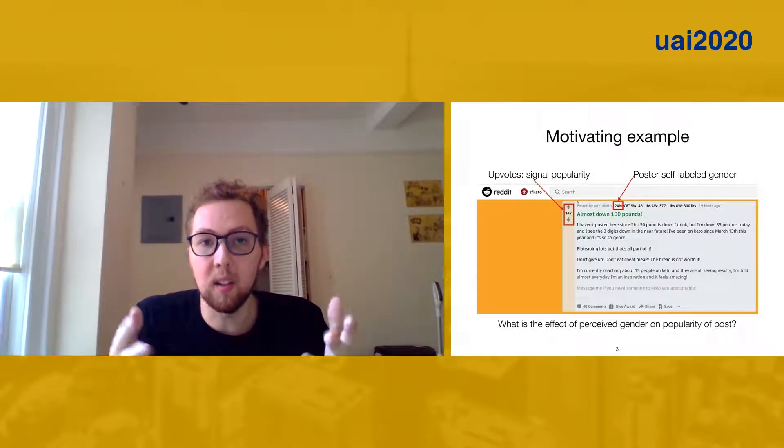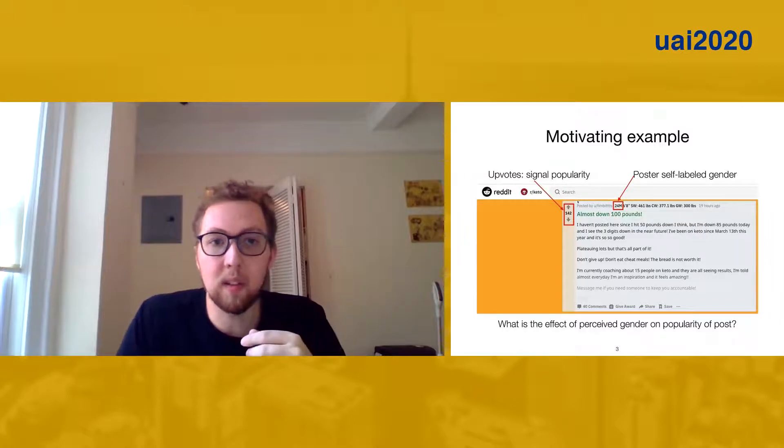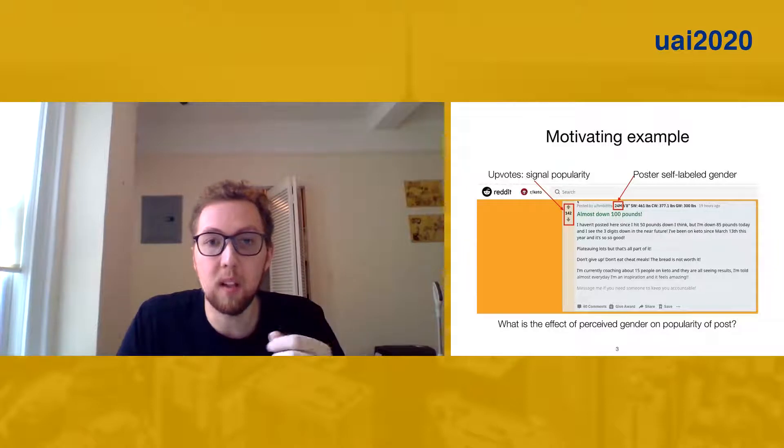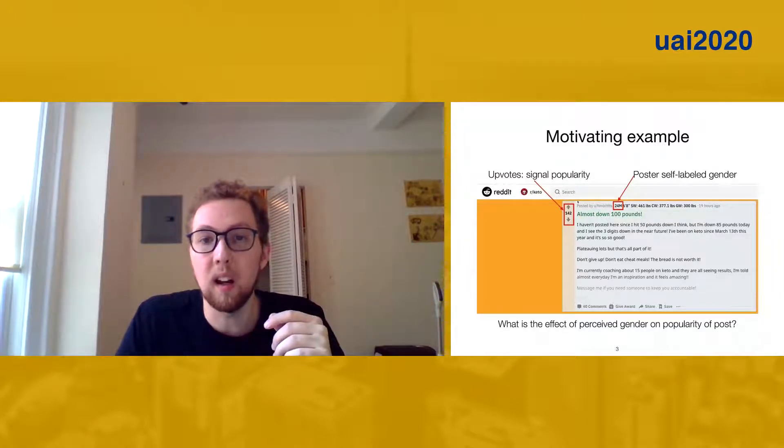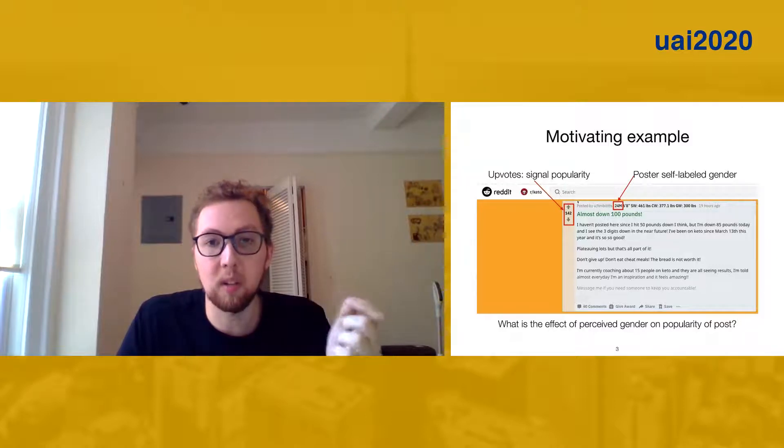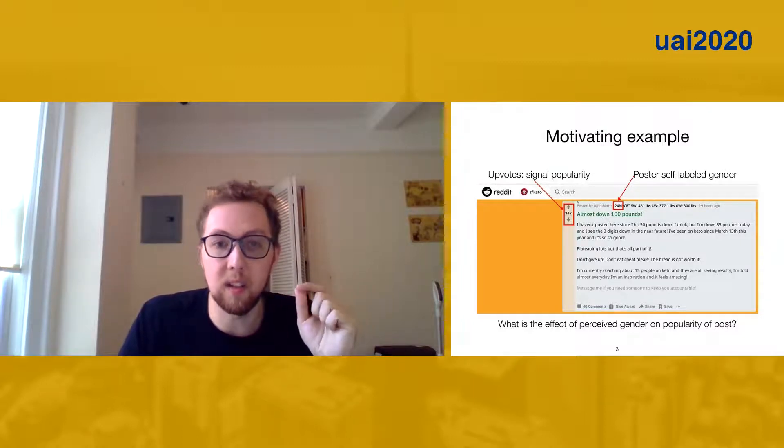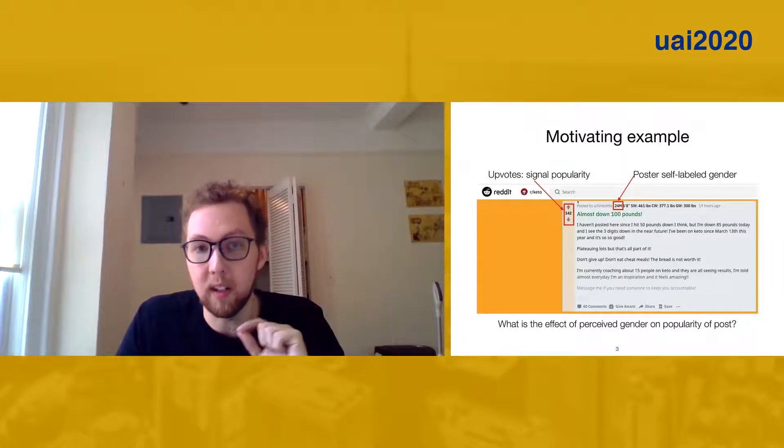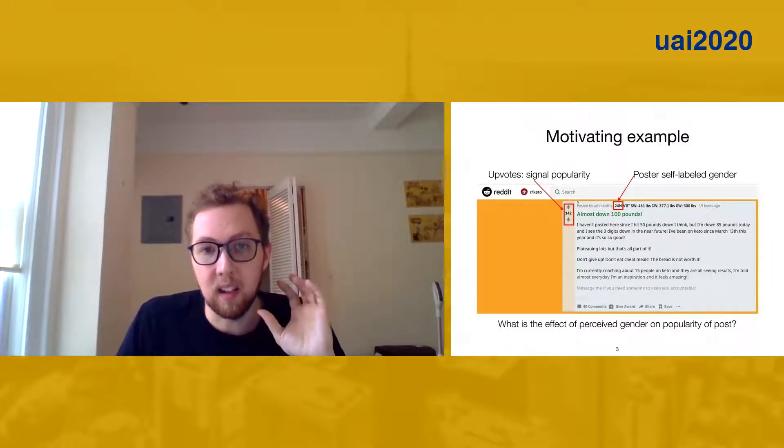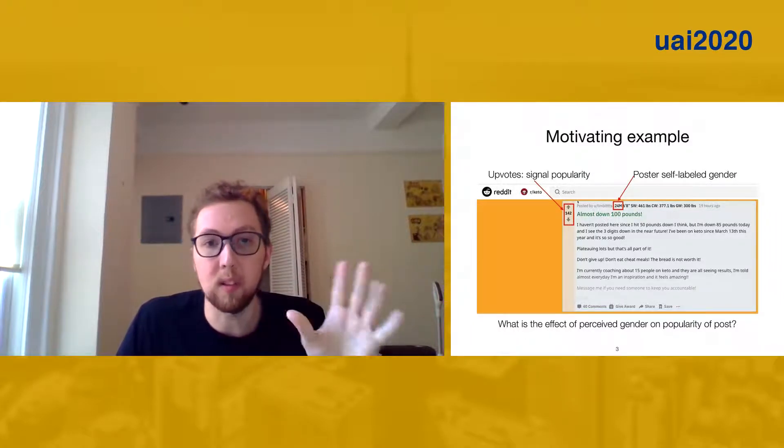Here's a motivating example illustrating the broad approach. In this example, there's some outcome that we're interested in - the score of a Reddit post. And there's some treatment that we're interested in - the self-labeled gender of the poster on this post. And the question is, what is the causal effect of this treatment attribute of the text on the outcome attribute of the text? Another key element is we're going to observe the text data that goes along with the post, and that will be critical later.